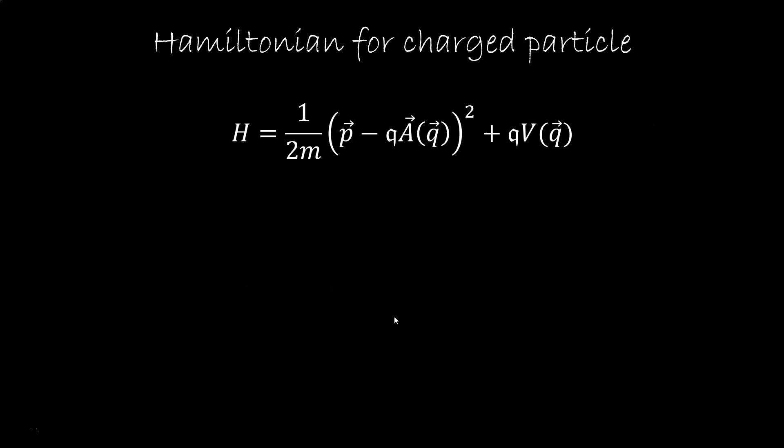This is a Hamiltonian for a charged particle. m is the mass, p is the momentum, the q in the gothic font is the charge, a is the magnetic potential, which is a function of q, the position, and finally phi is the electric potential.